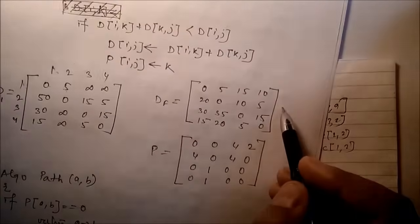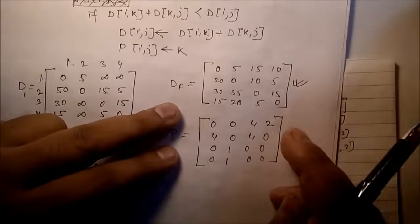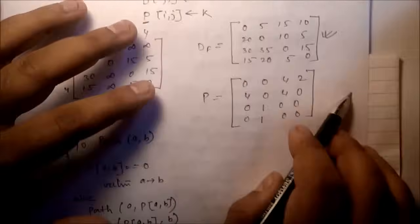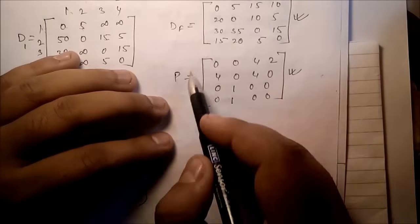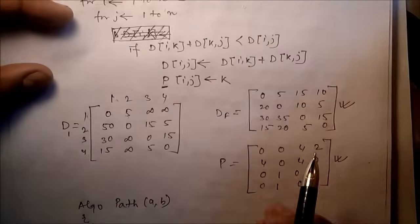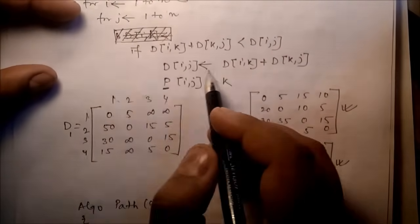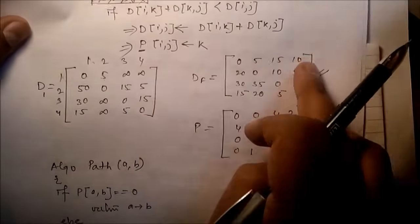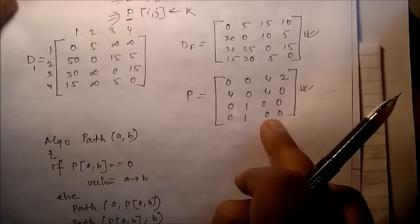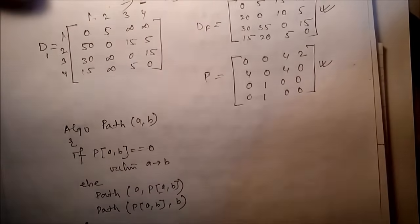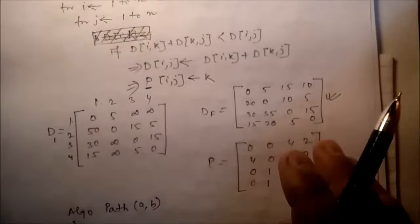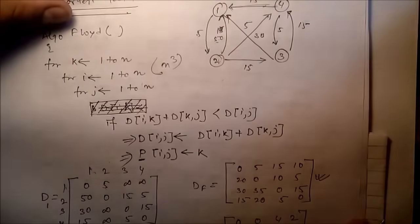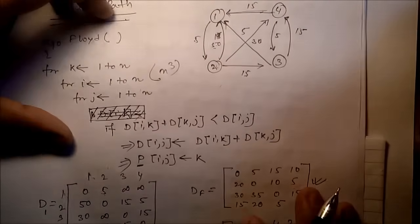After applying the algorithm, the final output will be this D matrix, and simultaneously we are also filling in the P matrix. Two arrays are maintained: the D array and the P array. The final D values and final P values are shown here. From this final D array we can read all minimum distances.